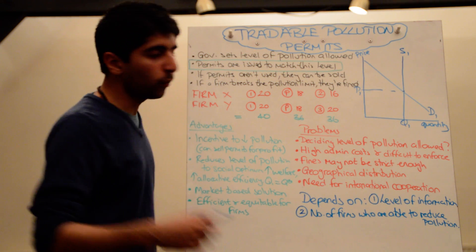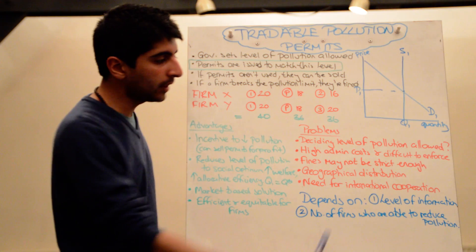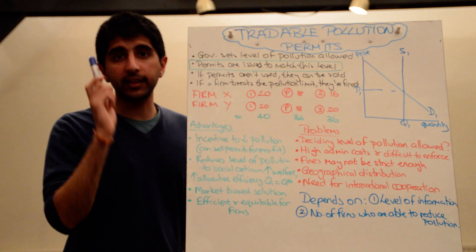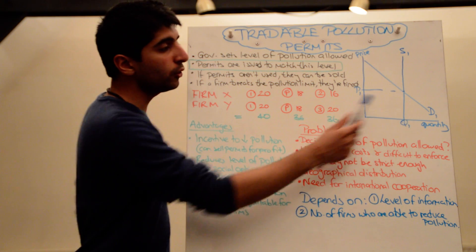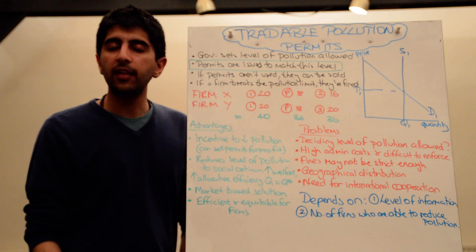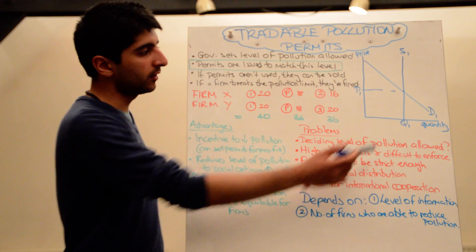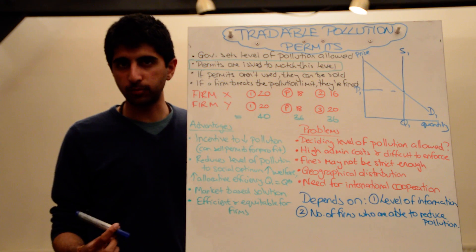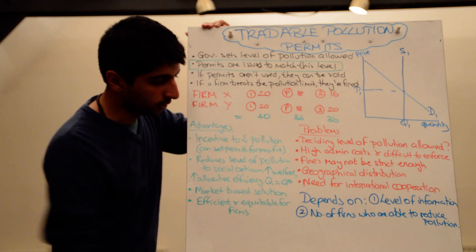So overall, whether this policy is going to work in solving the market failure and improving resource allocation depends on the level of information that the government has. If the information is good, and the government actually knows what the optimum level of pollution is, the chances are that policy will be more efficient. If it doesn't, chances are it won't quite get to the social problem level of pollution, of production. So that's an important depends on point.